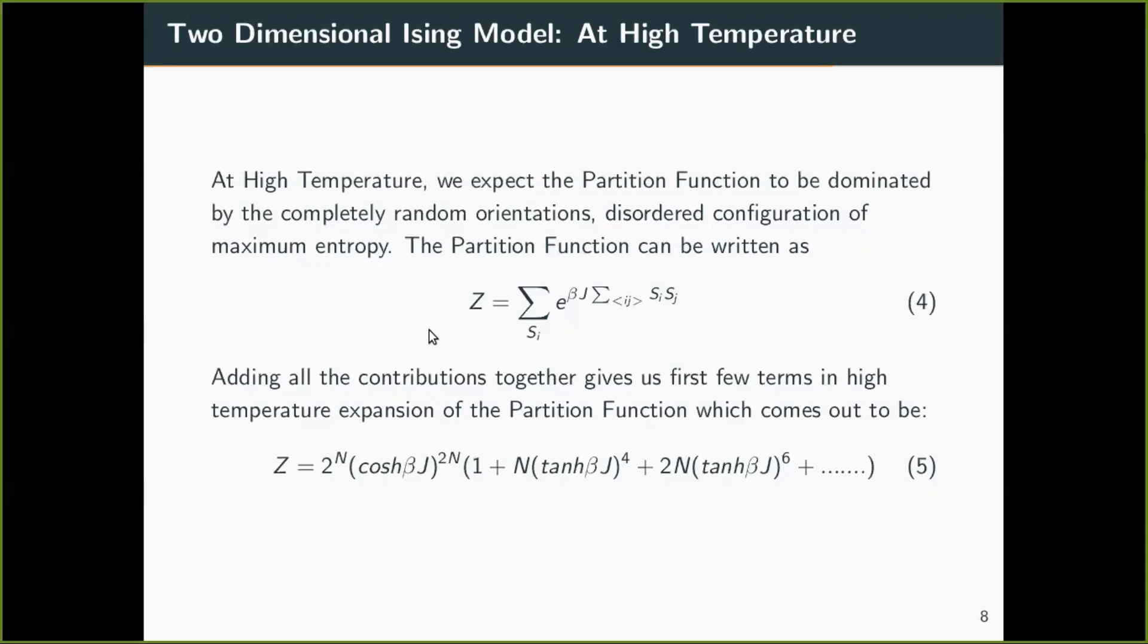So the partition function can be written as this because we have already set B equal to zero. And when we expand this and do the high temperature approximations we get Z equal to this. I have not shown the derivation but I have done this in my term paper. You can check it out there.